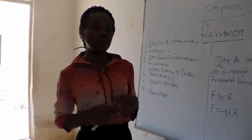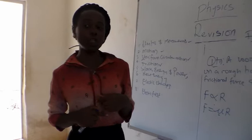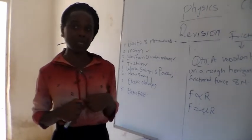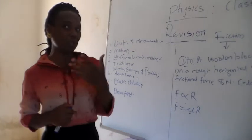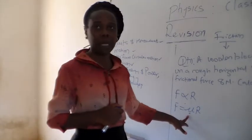Now, for a body, before a body begins to move, you need to overcome what is called the limiting or static friction. And in order to do that, to get the magnitude of that friction, you use this formula.